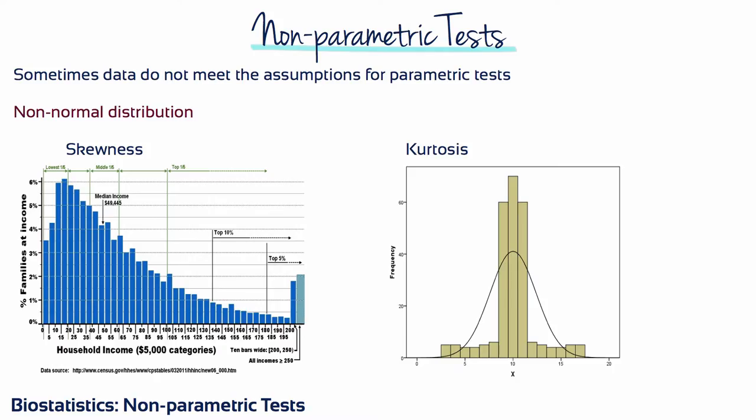Even when a variable is on an interval or ratio scale, it might not be normally distributed, and thus would violate an assumption necessary for parametric tests. Sometimes variables are skewed, such as household income. The mean would not be a good representation of the center of such a distribution. When comparing groups on income, it is possible a couple of households could make a test between groups statistically significant, even if the groups are mostly comparable. Another type of deviation from normality is kurtosis.